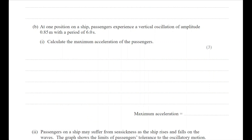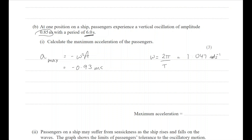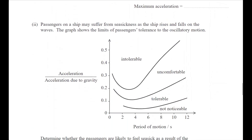A position on the ship experiences a vertical oscillation of amplitude 0.85 m with a period of 6 seconds — already in SI units, no traps here. To calculate maximum acceleration: a_max = −ω²A, where ω = 2π/T = 1.047 rad/s. Squaring and multiplying by 0.85 m gives a_max = −0.93 m/s².